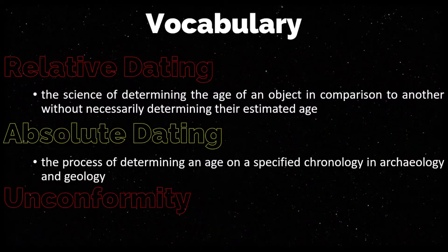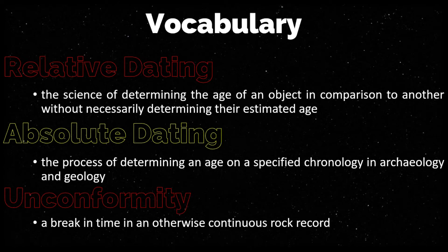Absolute dating is the process of determining an age on a specified chronology in archaeology and geology, which we will study in the next video. Lastly, we have unconformity — simply, this is a break in time in an otherwise continuous rock record.